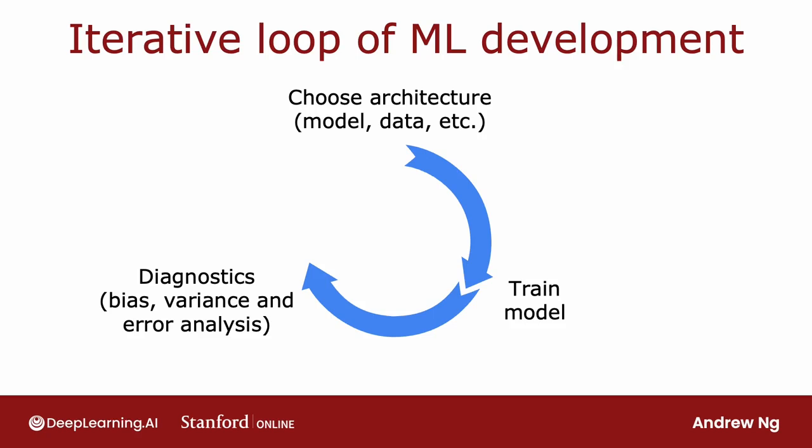Based on the insights from the diagnostics, you can then make decisions like: do you want to make your neural network bigger, or change the lambda regularization parameter, or maybe add more data, or add more features, or subtract features. Then you go around this loop again with your new choice of architecture. It will often take multiple iterations through this loop until you get to the performance that you want.